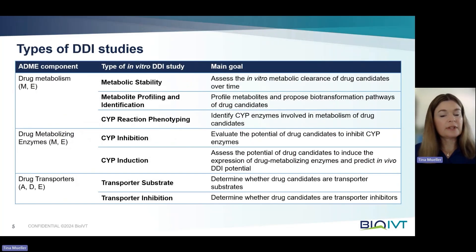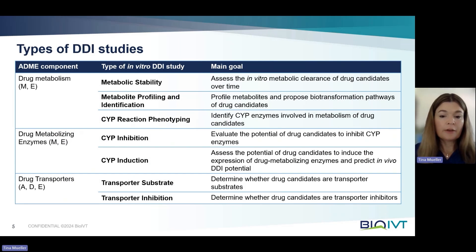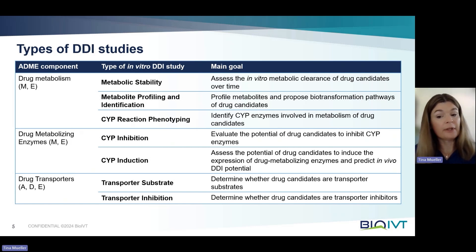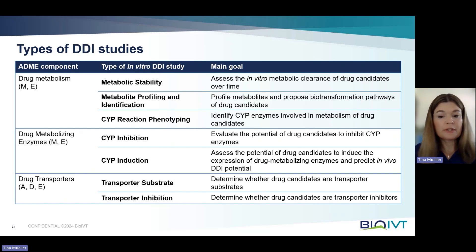Now let's take a closer look at the studies that are part of these important DDI evaluations. There are three main areas: drug metabolism, drug metabolizing enzymes, and drug transporters. The first two assess metabolism and excretion — M and E — while transporter studies evaluate absorption, distribution, and excretion — A, D, and E.